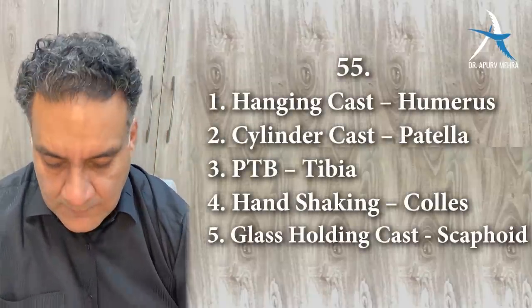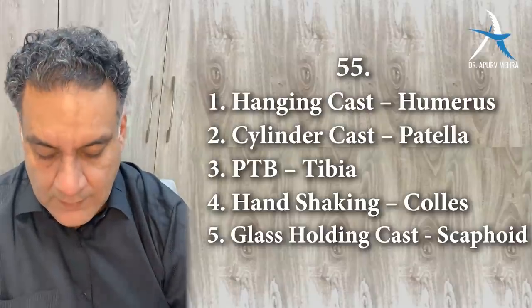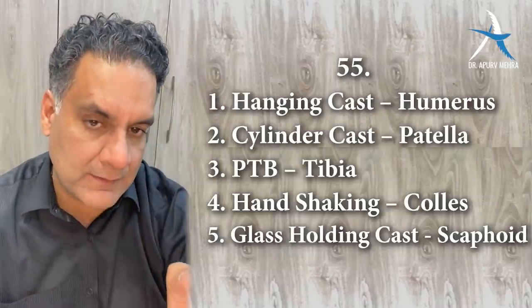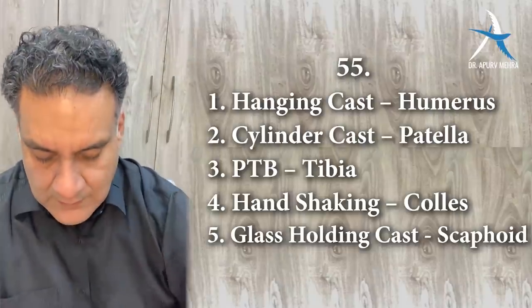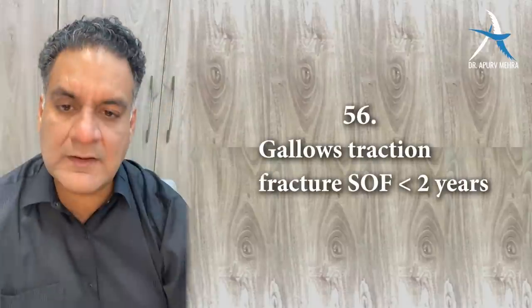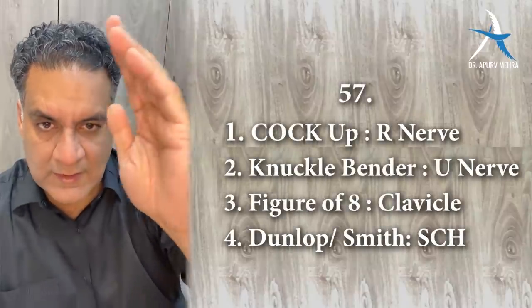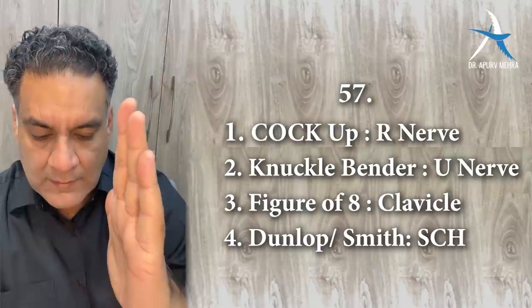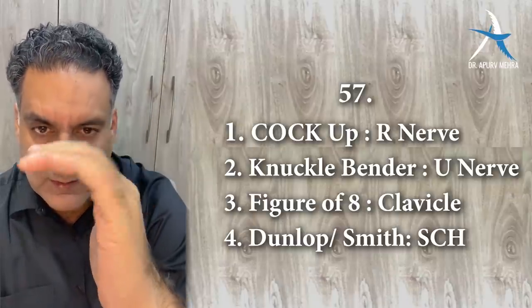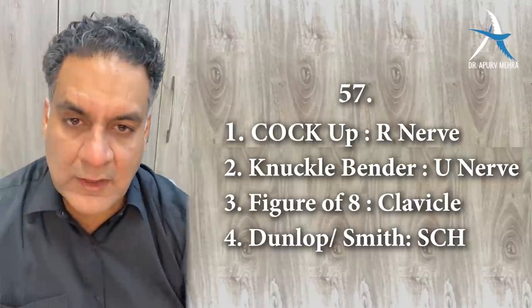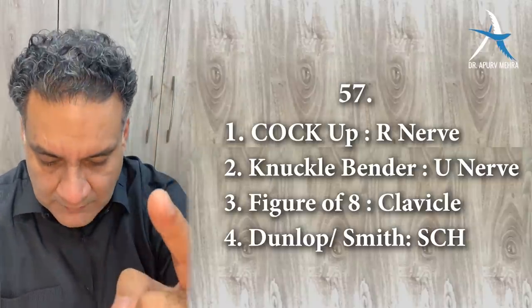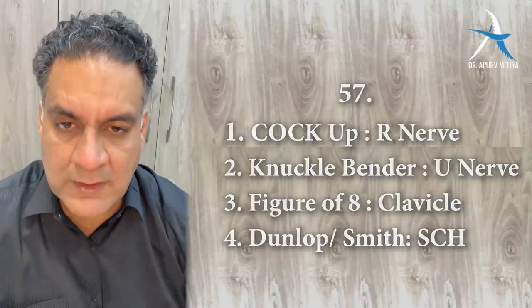Point number fifty-five: important casts to remember — hanging cast for humerus, cylinder cast for patella, patellar tendon bearing cast for tibia, handshaking cast for Colles', glass-holding cast for scaphoid. Point number fifty-six: gallows traction — examiners love it — for fracture shaft of femur in children less than two years of age. Cock-up splint for radial nerve palsy, because radial nerve causes wrist drop. Knuckle bender splint for supracondylar fractured humerus.